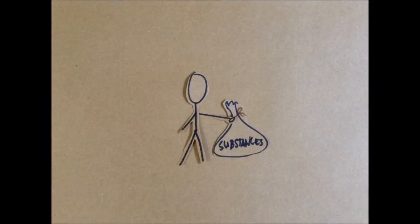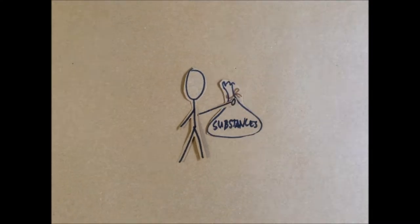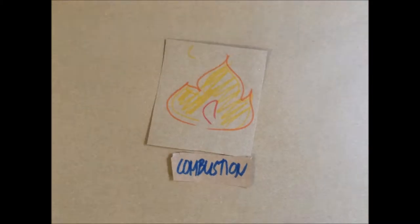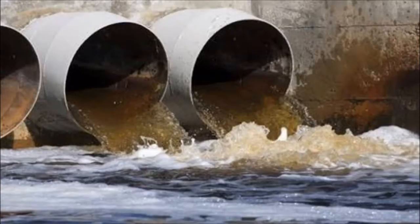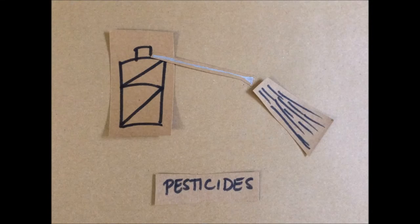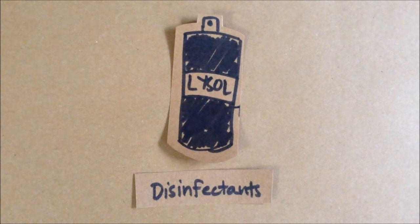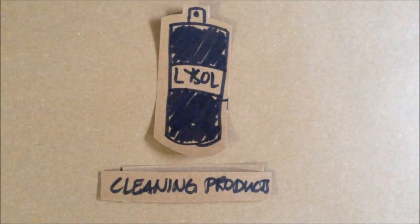Many substances enter the sea as a result of human activities. Combustion products are transported in the air and deposited through precipitation. Agricultural, industrial, and sewage outflows contribute heavy metals, pesticides, PCBs, disinfectants, cleaning products, and other synthetic chemicals.